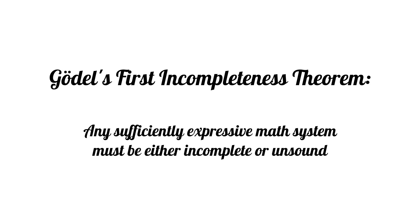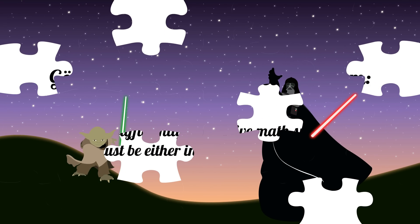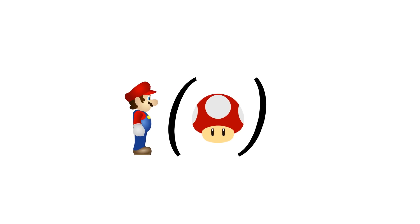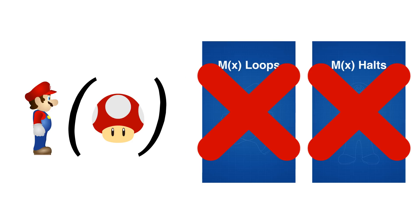As an interesting side note, let's assume math is sound, and re-examine the case in which our math system is incomplete. That means we have some program M and input X, for which we can never prove either M loops or M halts. But what does that program actually do?